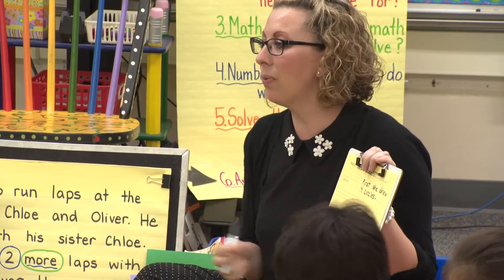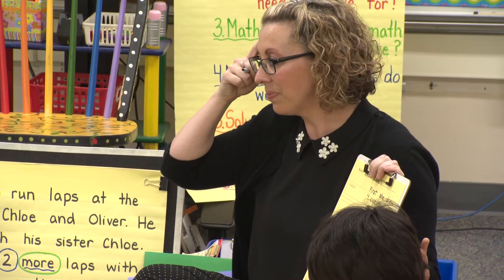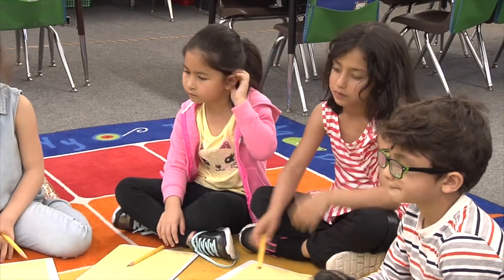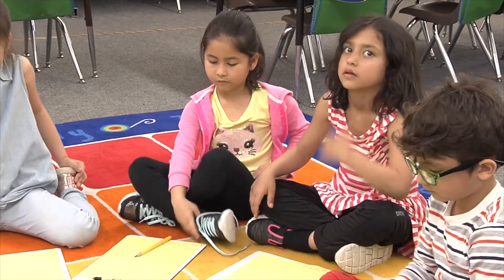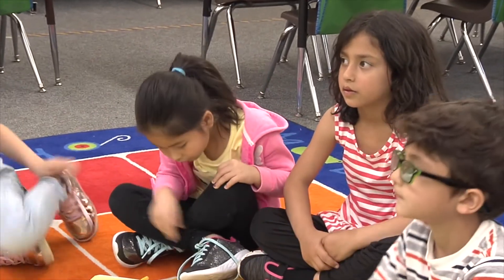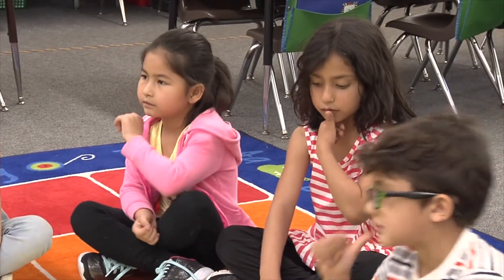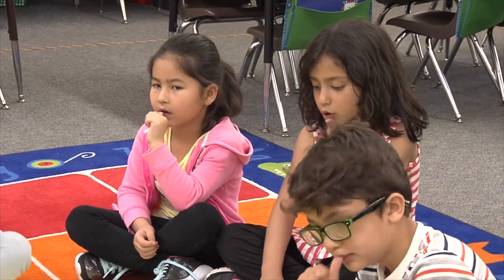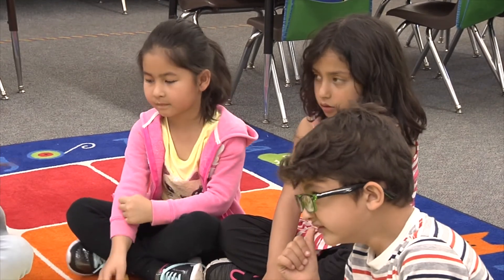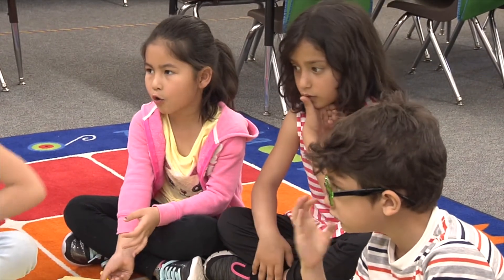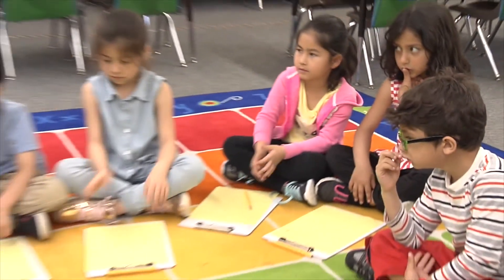Teacher: Let's read the first step. First, she drew four circles. What do we need to write? Think to yourself. Put your pencil down. Whisper what we need to write to show what Marhaba did then. What sequential connective are you going to use? Students: Then. Teacher: Then... Students: She drew two more circles. Put your microphone away.